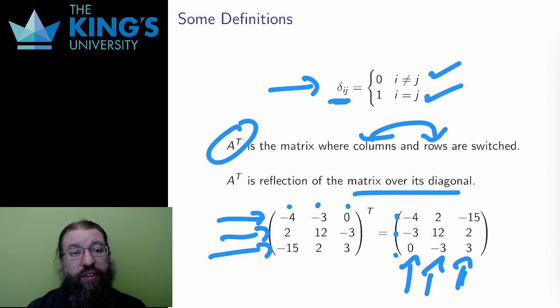Also, you could also look at this as just flipping over the diagonal. The 2 and -3 have switched, the 0 and -15 have switched, and the other 2 and -3 have switched. The diagonal entries stay entirely the same. This is the transpose.